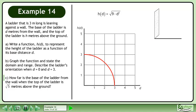Let's redraw the graph from Part B. Set the height equal to root 5 and solve for d. Square both sides of the equation to get rid of the radical.